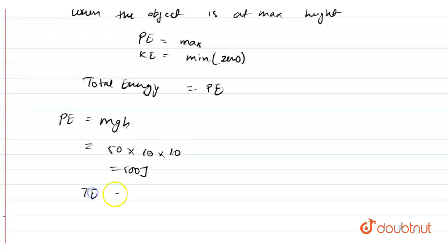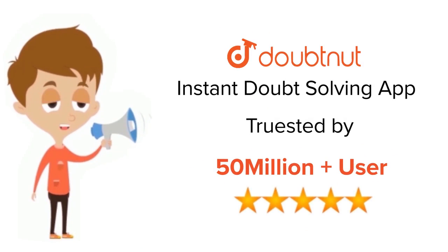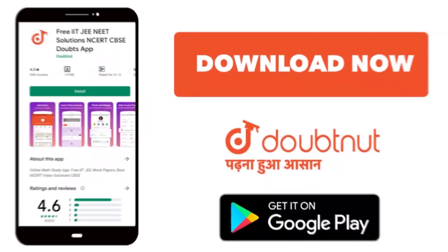So, the total energy is 500 Joules at any instant of time. Hope this answered your question. For Class 6 to 12, IIT and NEET Level, trusted by more than 5 crore students. Download DoubtNet app today.